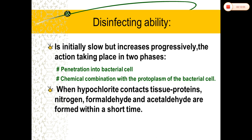Regarding pH: if hypochlorite is diluted, its tissue-dissolving property decreases. HOCl is a stronger oxidant than the hypochlorite ion (OCl⁻) and is responsible for strong chlorination, oxidizing action, and tissue dissolution. The dissociation of HOCl to OCl⁻ depends on pH: at pH 10, the OCl⁻ form exists, and at pH 4.5, HOCl dominates. Therefore, the antibacterial property of hypochlorite is greater in acidic pH.